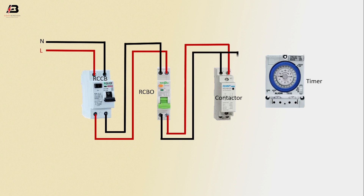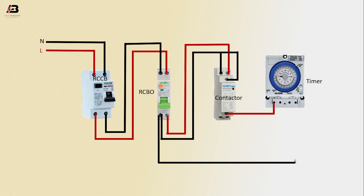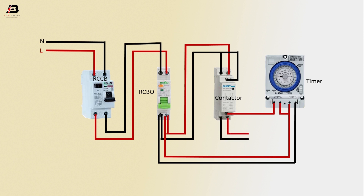Neutral connection to contactor another point. Output connection from contactor to connect timer. Neutral connection from RCBO to timer, phase connection from RCBO to timer. Phase connection to timer another point. Output connection from contactor for load.